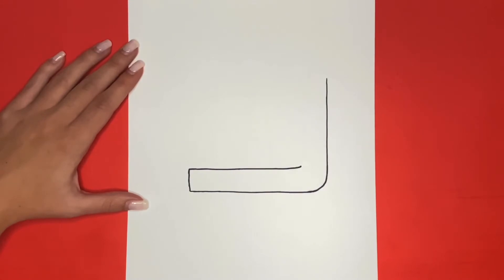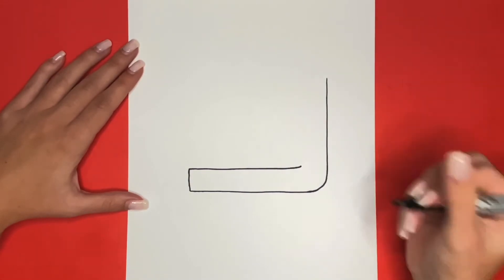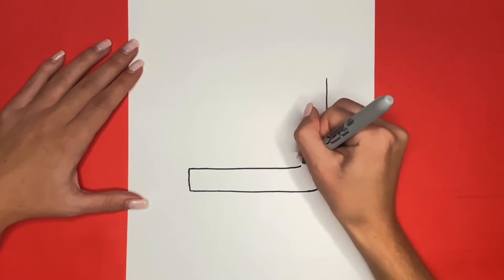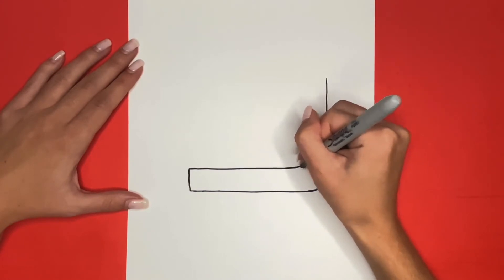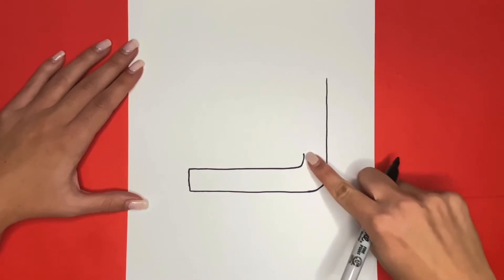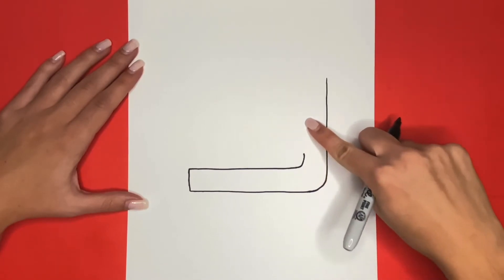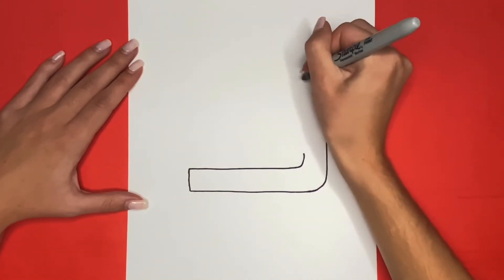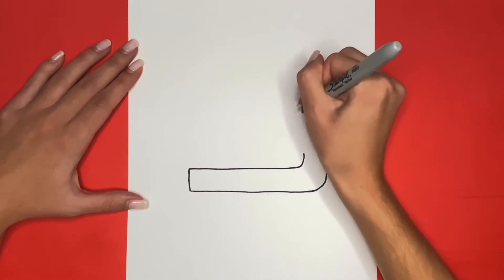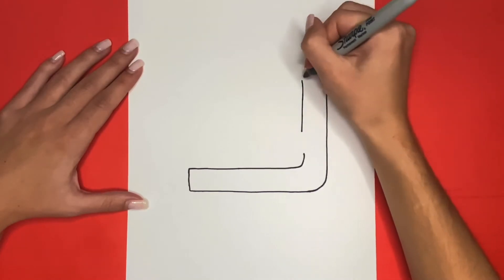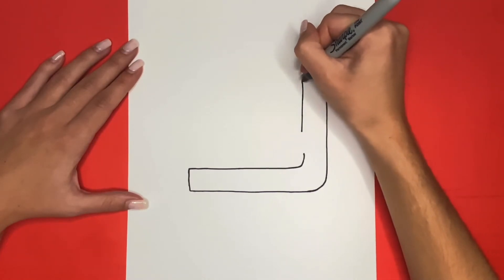Then at the end of that line, we are going to curve it upwards a little bit. Then above that, we are going to draw a straight line going up and down. This will follow the same path as this line right here. Then at the top of that line, we are going to draw a straight line going to the right connecting to the other line.